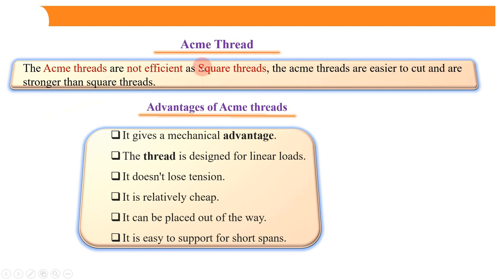The next type of thread profile is the Acme thread. Acme threads are not as efficient as square threads, but they are easier to cut and are stronger than square threads. The strength of Acme threads is more than that of square threads.